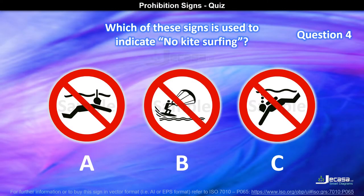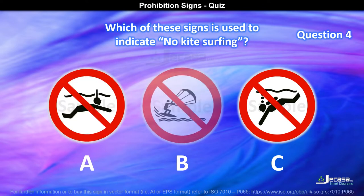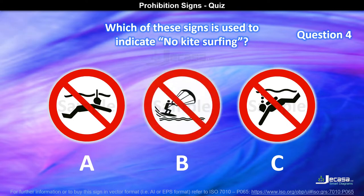Question 4. Which of these signs is used to indicate no kite surfing? Is it A, B, or C? The answer is B.